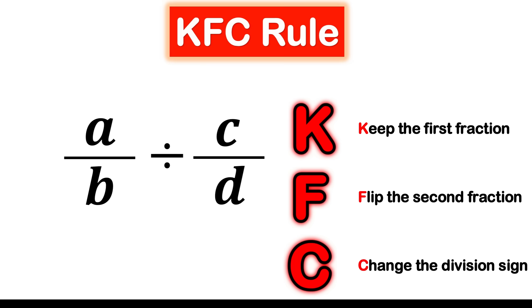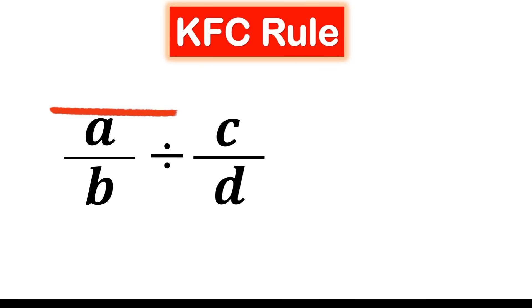So if we have the fraction a over b divided by the fraction c over d, according to KFC we follow three steps: First, keep a over b. Second, flip c over d, turning it into d over c. And third, change the division sign to multiplication.